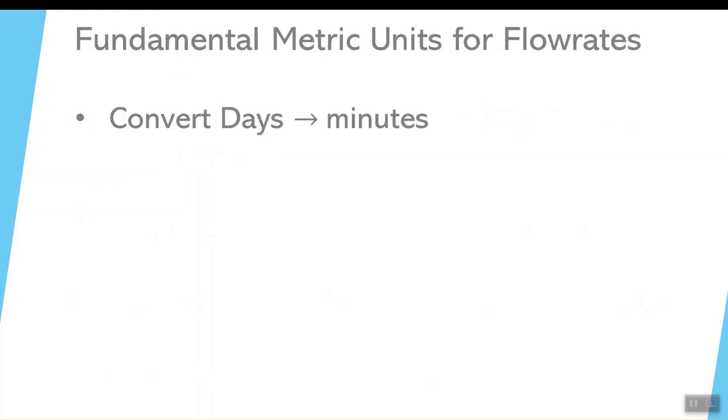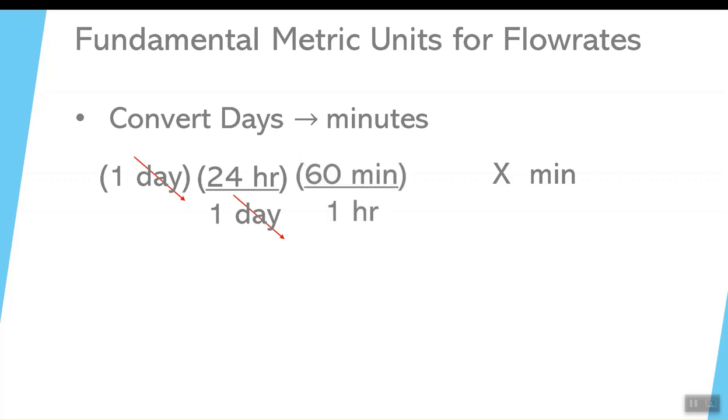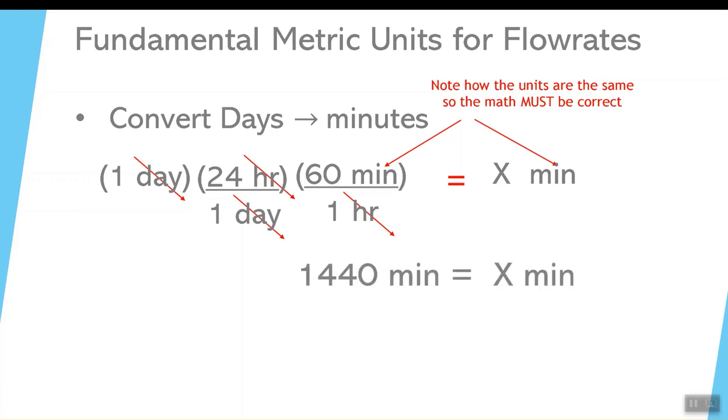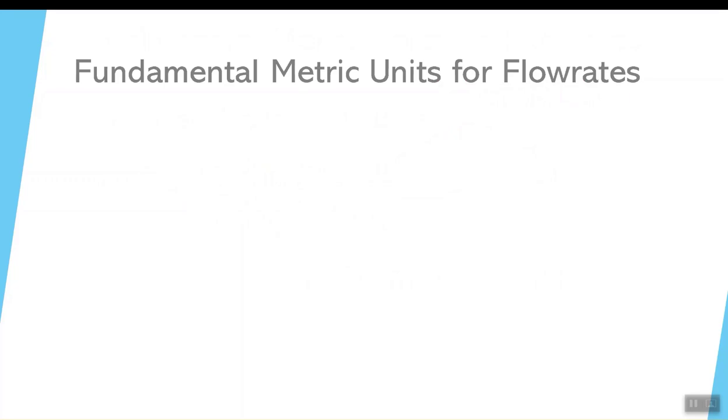So how many minutes in one day? You've got one day, we want to convert it to minutes. Let's multiply by 24 hours in one day. Notice how the day unit disappears. You are left with 24 hours, but that's not the right unit—hours does not equal minutes. Multiply 24 hours by 60 minutes, cancel out the units, and you are now left with minutes on both sides of the equal sign. If the units cancel out, you must be doing your math correctly. So 24 times 60 is 1440 minutes in one day.